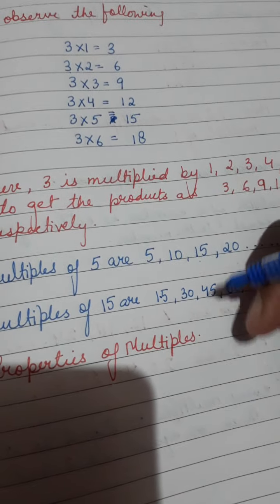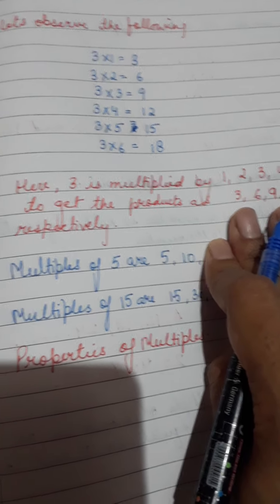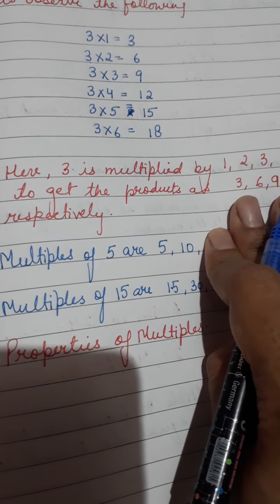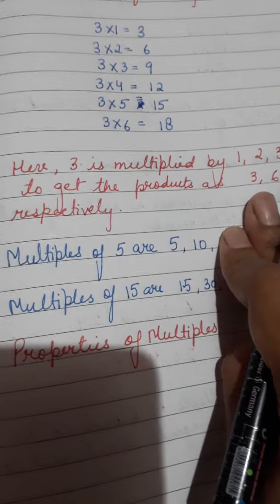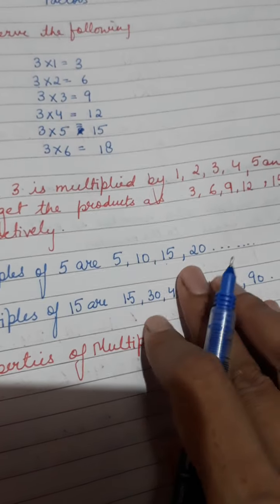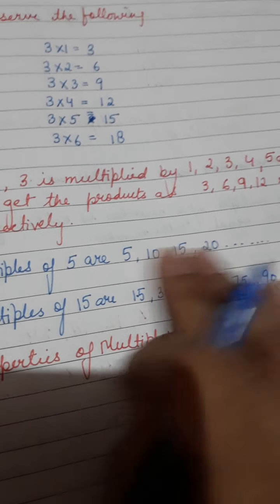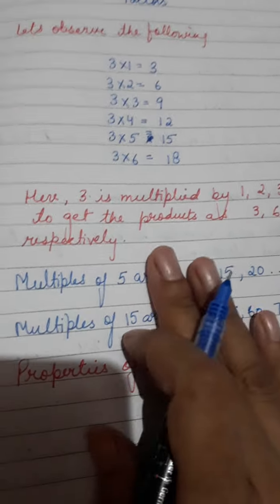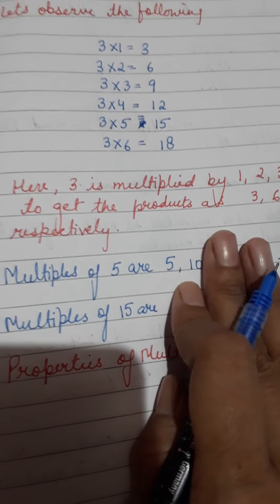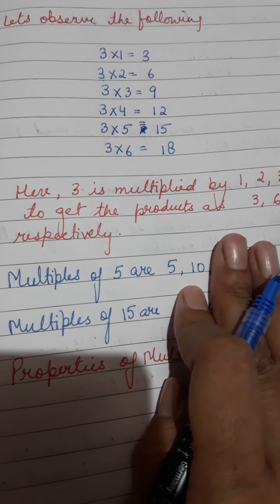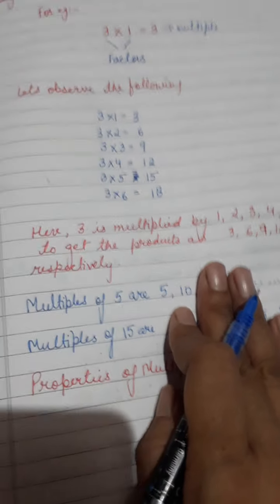So for any particular number, if I say write the multiples of 5, you write them up to ten. If I say write the first two multiples of 5, you write only 5×1=5 and 5×2=10. Those are the only answers.